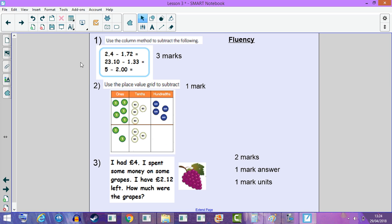Our fluency: use the column method to subtract the following three questions. The most important thing is to make sure you are lining up your decimal points first before subtracting. Number 2: use a place value grid to subtract these numbers. Number 3: I had £4, I spent some money on some grapes, I have £2.12 left. How much were the grapes originally? You have 2 marks: 1 mark for answer and 1 mark for units.